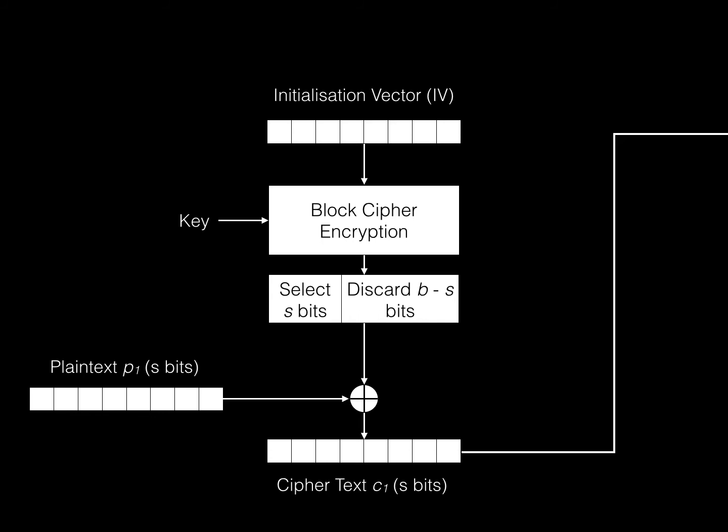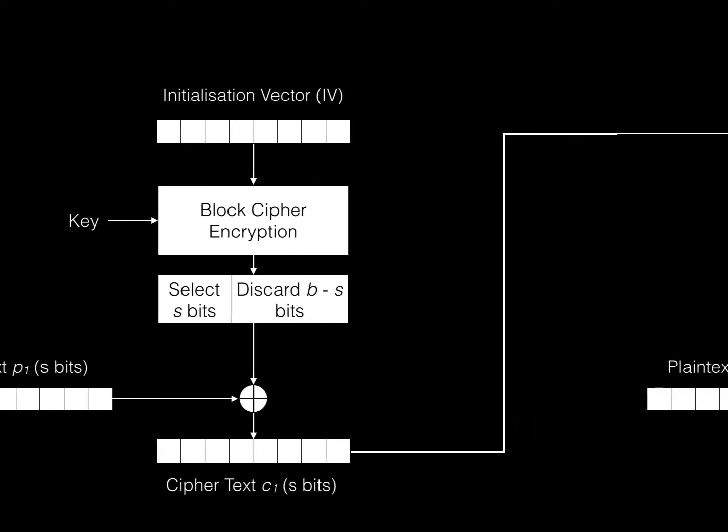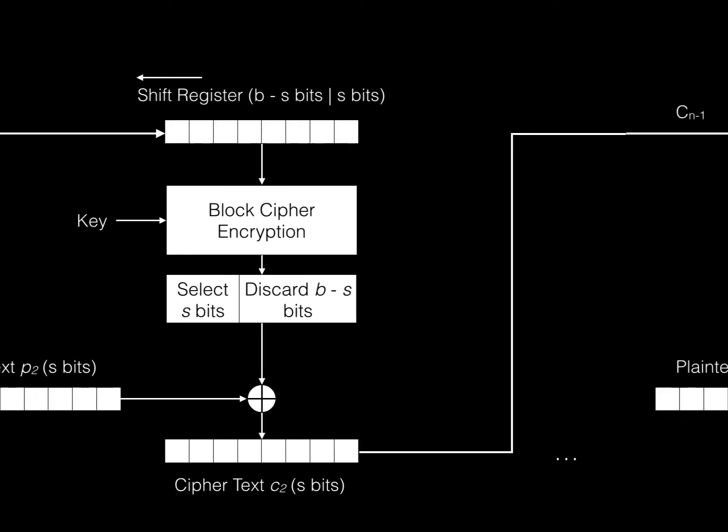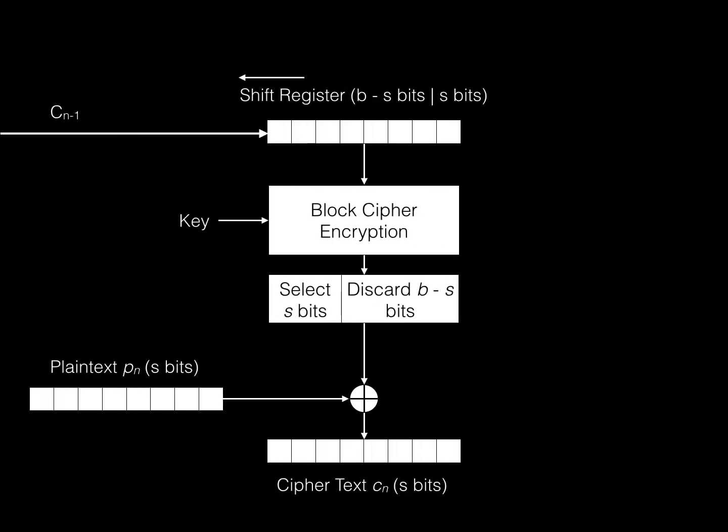C1 is used in the next sequence to follow. We then shift the IV by S-bits and continue the operation. Select the next set of S-bits from plaintext and XOR to produce ciphertext C2. This process continues until all of the plaintext is converted to ciphertext. Encryption done.